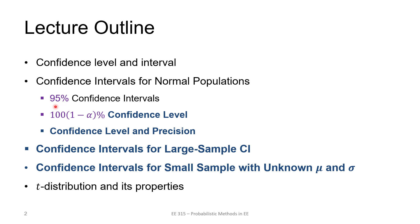We will generalize to the 100 times (1 minus alpha) percent confidence level, where we can control alpha. Then we will look at the confidence level and precision trade-off. We will consider the general case when the distribution is not known but we have a large number of samples, and then the case of a small number of samples with unknown mu and sigma, which leads us to the t-distribution.